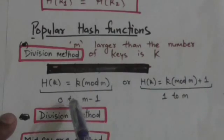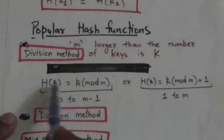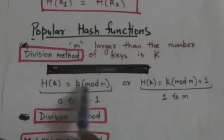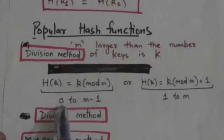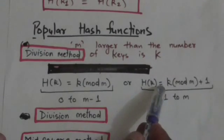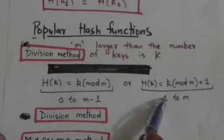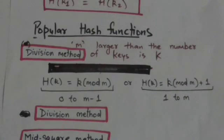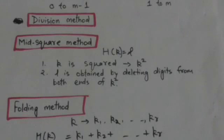The hash function h is defined by h(k) = k mod m, or h(k) = k mod m + 1. Here k is a key. If we use the first formula we will get hash addresses ranging from 0 to m−1, but if we use the second formula we will get hash addresses ranging from 1 to m.